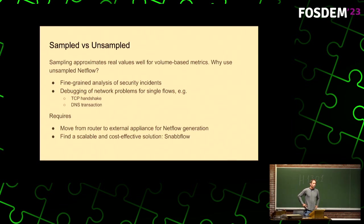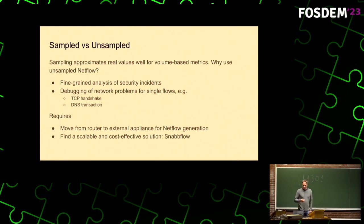But as I said, we can no longer do that on our big new core routers — they only give sampled NetFlow. So we started to do this with an external box, and that's where the SnapFlow software implementation comes in.